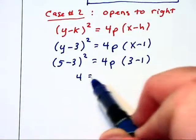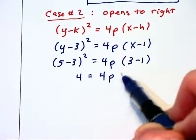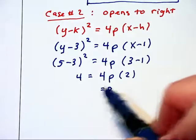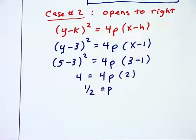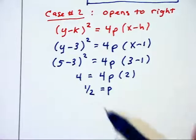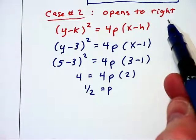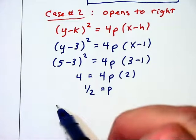Again, the left side of this equation becomes 2 squared, which is 4, the right side is 4 times p times 2, and again, p is going to equal 1 half.